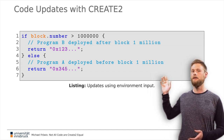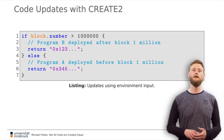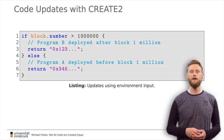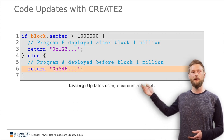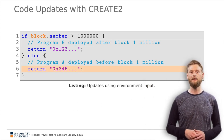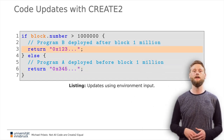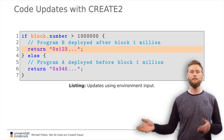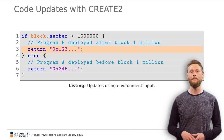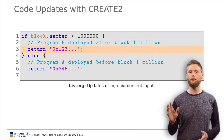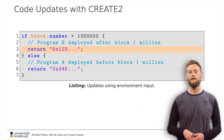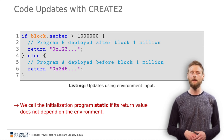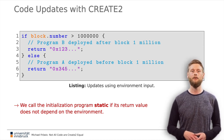So how do we use these observations to enable code updates via CREATE2? This initialization code returns different values depending on the state of its environment — here, the block number. Before block 1 million, this code would initialize the account with program A; after that point, it would deploy program B. Observe that the program stored at the new address changes, but the initialization code is the same. Therefore, the address stays the same if the seed and deployer are held constant. A necessary but not sufficient condition for code updates via CREATE2 is that the return value of the init code depends on the environment. We call code that is not dependent on the environment static.